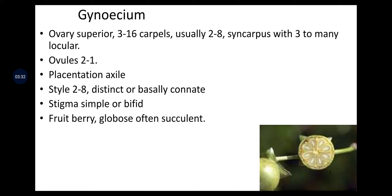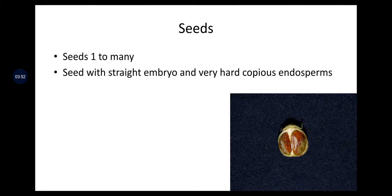Gynoecium: ovary is superior, 3 to 16 carpels, usually 2 to 8, syncarpous with 3 to many locules. Ovules are 2 or 1. Placentation axile. Styles 2 to 8, distinct or basally connate. Stigma simple or bifid. Fruit is a berry, globose, often succulent. Seeds one or many, with straight embryo and very hard, copious endosperm.